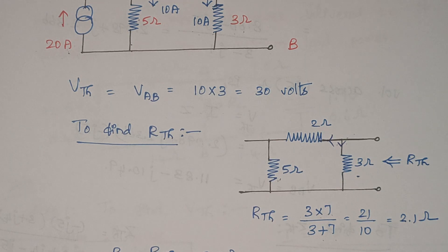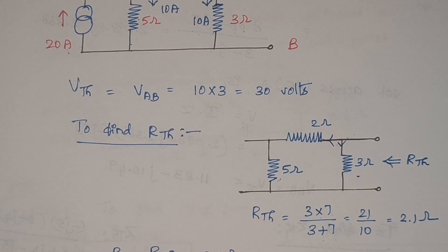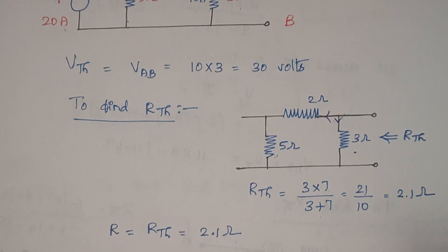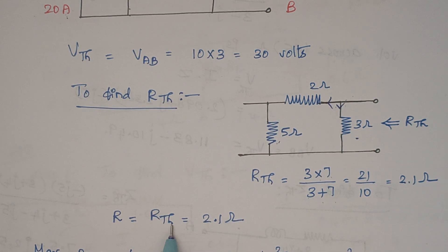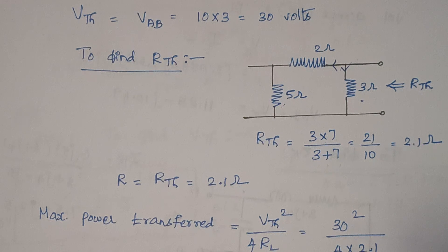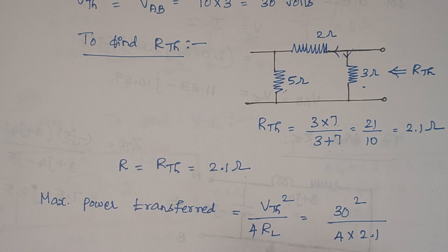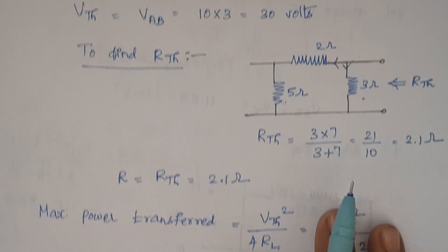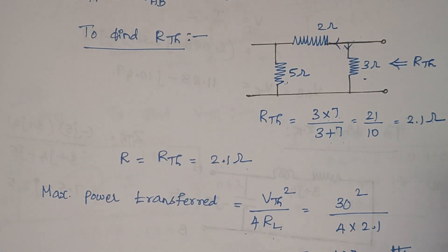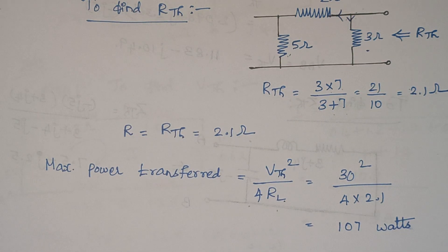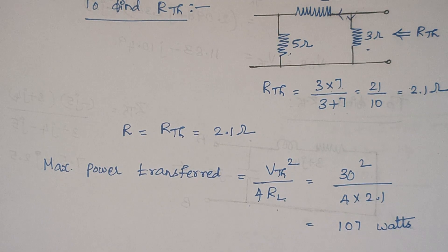Now the next thing is we need to calculate the maximum power transfer. Since we are dealing with maximum power transfer, the main criteria is maximum power transfer will occur when the source resistance is equal to the load resistance. So here R_Thevenin is nothing but our R, which is equal to 2.1 ohms. The maximum power transfer is given by the formula V_Thevenin squared divided by 4RL. We know the value of Thevenin's voltage and the load resistance, so substituting 30 and 2.1, the final answer is 107 watts. This problem gets over here.